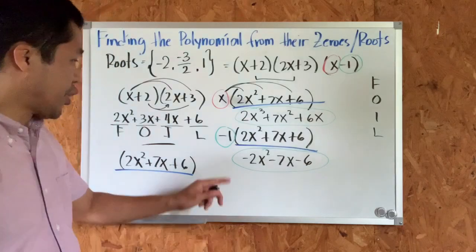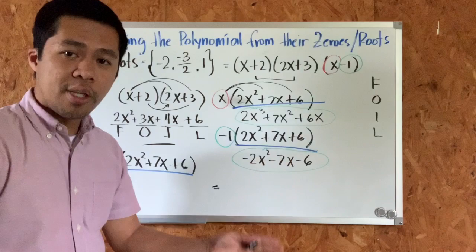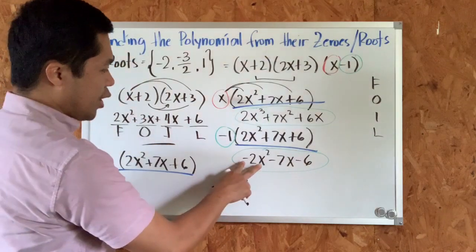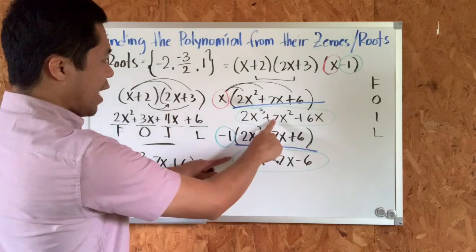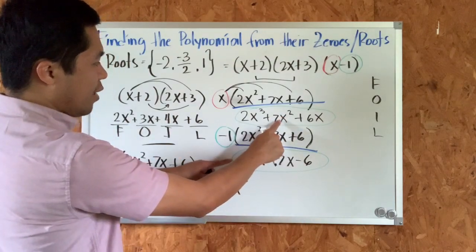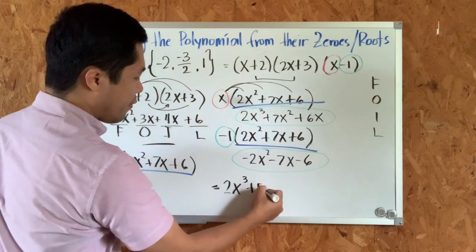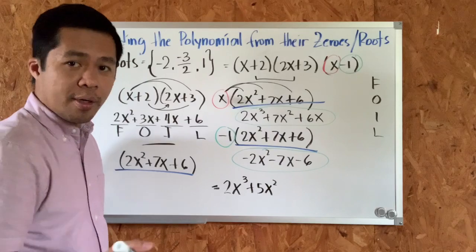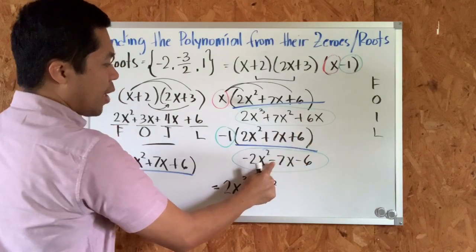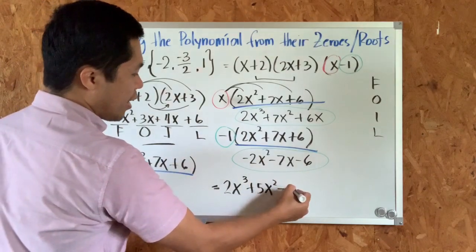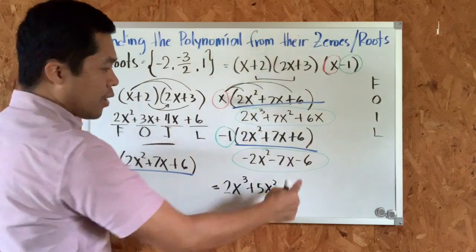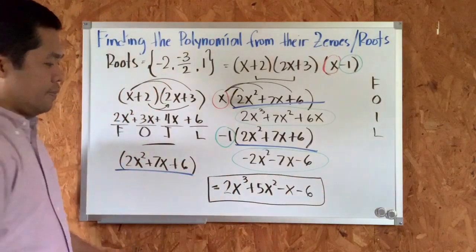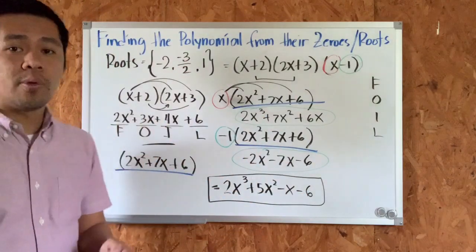Now we simplify by combining like terms. There is no term similar to 2x cubed, so we keep it as is. For x squared terms: positive 7x squared plus negative 2x squared equals positive 5x squared. For x terms: 6x plus negative 7x equals negative x. The constant is negative six. So the final answer is 2x cubed plus 5x squared minus x minus six — this is the polynomial that has those three roots.